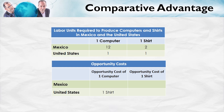Now the slightly harder case: what's the opportunity cost of one computer in Mexico? In Mexico, in order to get an additional computer, you'd have to transfer 12 units of labor from shirt production into computer production. Since it takes two units of labor to produce one shirt, moving 12 units means the opportunity cost of one computer is six shirts. Going the other way, in order to get an additional shirt, you're going to have to give up one-sixth of a computer.